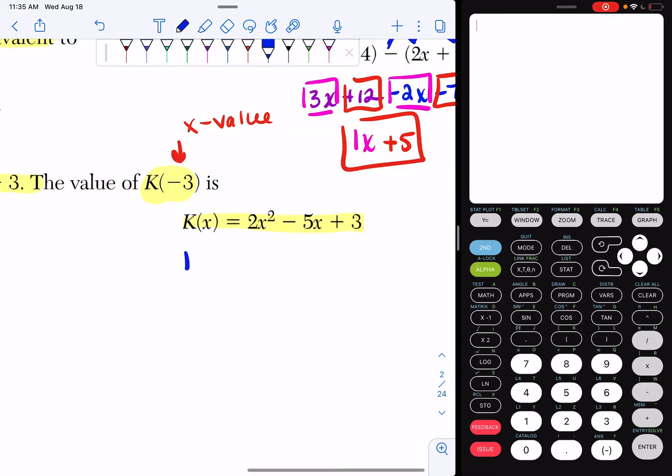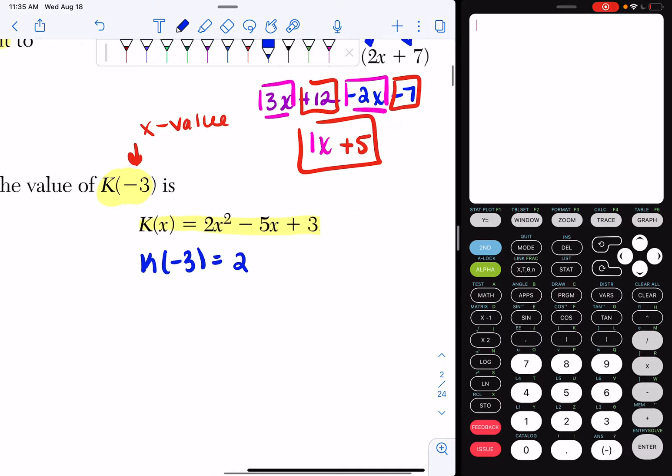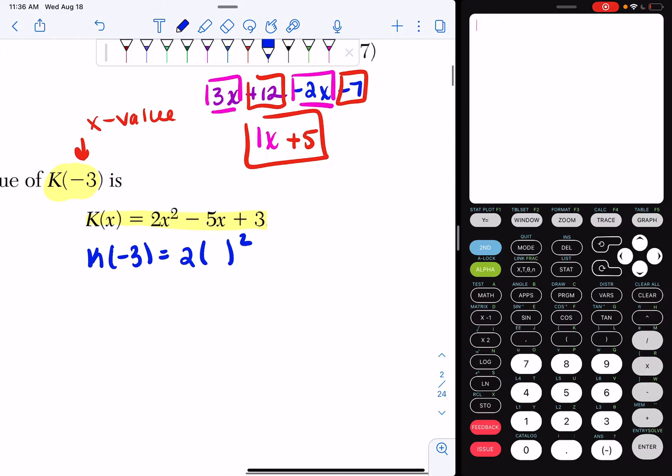So I have K of negative 3 equals 2... What I'm going to do is everywhere I see an x, I'm actually just going to put a parenthesis, because whenever I do plugging in or substituting, I put a parenthesis. So I have now my 2 parentheses squared minus 5 parentheses plus 3.